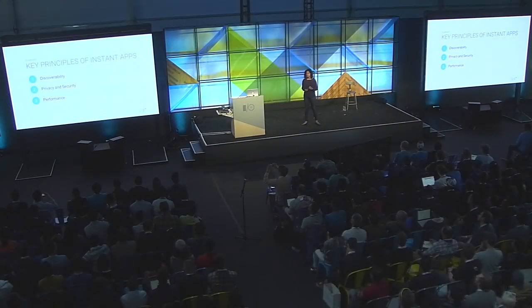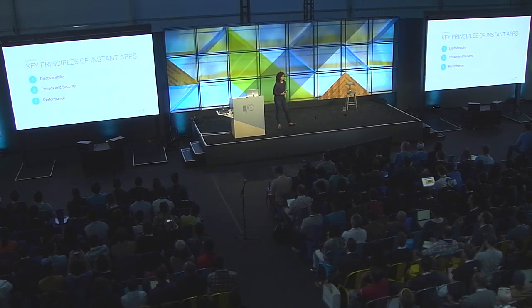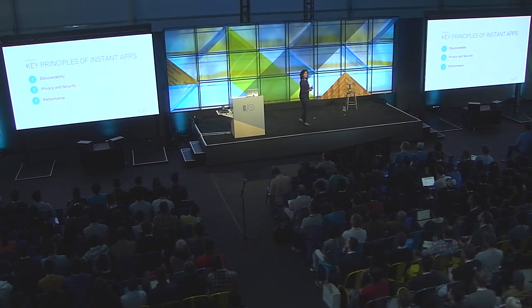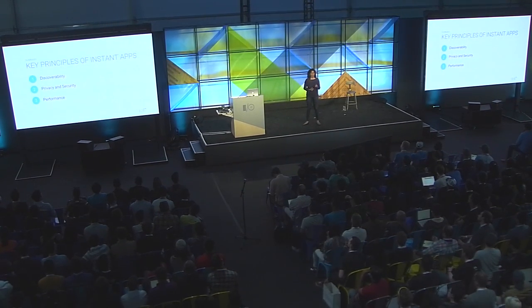You can then build your application into modules. Remember, Instant Apps support multiple entry points, so having modules that support each of these entry points allows us to only load the module needed for a given entry point, with the ability to load more as the user goes through different flows within your app. To quickly summarize, three key principles: discoverability with Android App Links; privacy and security with the runtime permissions API; and performance with small, modular binaries.